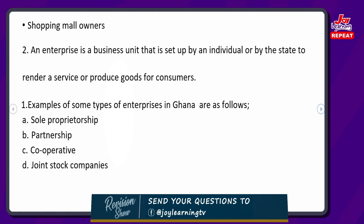Now let's look at what an enterprise is. An enterprise is a business unit that is set up by an individual or by the state to render services or produce goods for consumers. Some of these goods can be milk, Milo, a bar of soap, sugar, and other things.